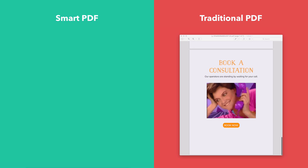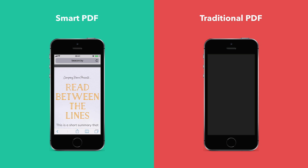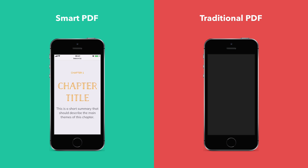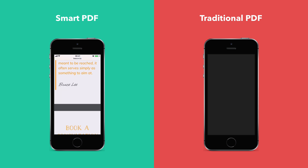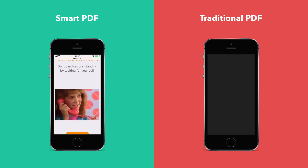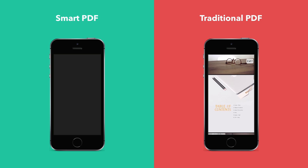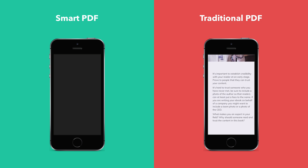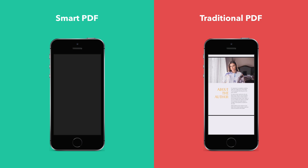One of the main differences between the two versions is how they're displayed on mobile devices. When the Smart PDF is loaded on a mobile device, the design is responsive. This means that your content will automatically adjust to fit the size of the screen, providing a nice comfortable reading experience for your audience. On the other hand, with the traditional PDF, the design is just shrunk down to fit the screen, meaning that people will probably have to pinch and zoom just to read your content, which can be uncomfortable.